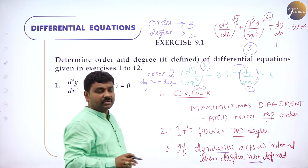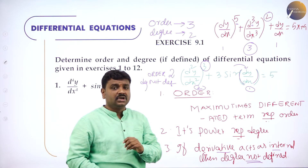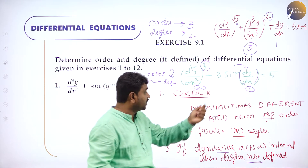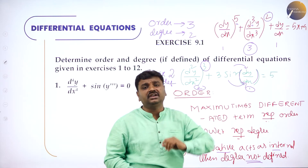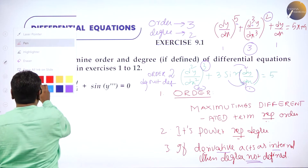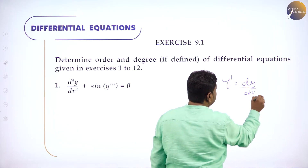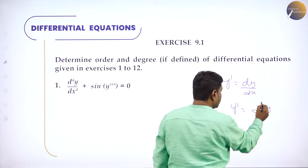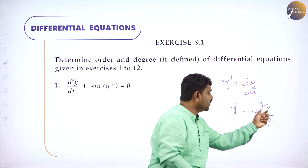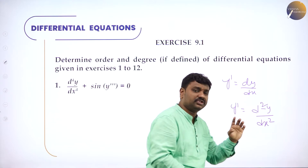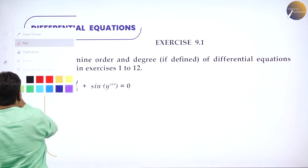So to summarize: order means maximum times differentiated term, its power is degree, and degree is not defined if the derivative acts as an internal function. You should also know notations: y' means dy/dx, y'' means d²y/dx², y''' means d³y/dx³, and so on. Between d and y, if we write 2, it is two times differentiated. Without wasting time, we will start and solve all the problems of the exercise.